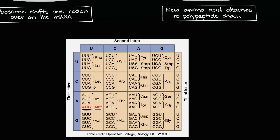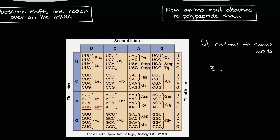So it turns out that 61 of the possible 64 codons code for amino acids, and three play a role that essentially tells the ribosome to stop — three codons are stop codons. You can see them right over here: UAA, UAG, UGA. That's how the ribosome knows to stop translating.